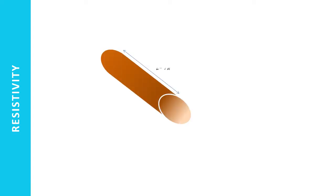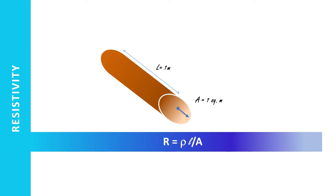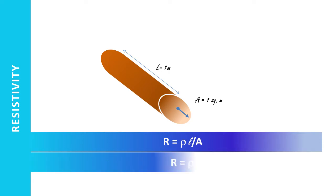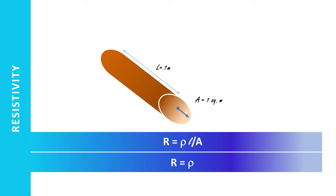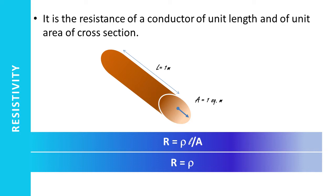Now let's look at what resistivity is. From the formula R = ρL/A, if we consider a conductor whose length is 1 meter and area of cross section is 1 square meter — that is, both L and A equal unity — then R becomes equal to ρ. So resistivity is defined as the resistance of a conductor of unit length and unit area of cross section.